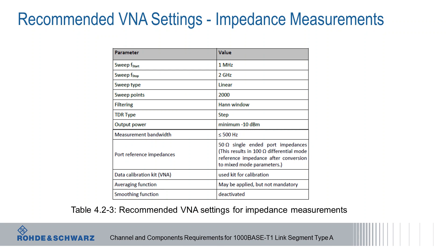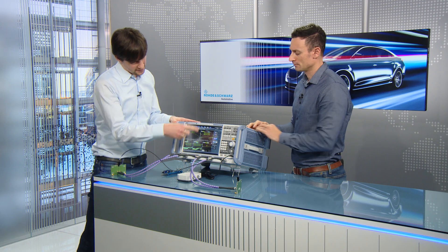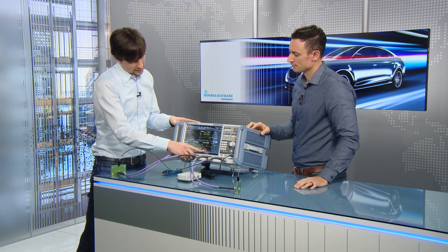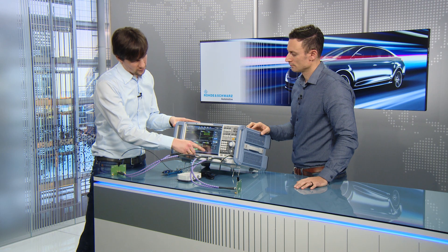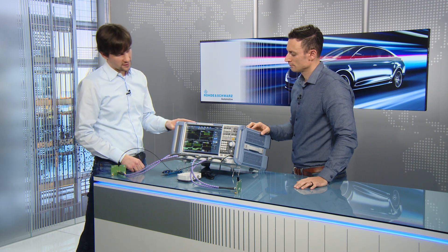The TC9 specification also mentions the impedance measurements. For that we need different settings. To use these different settings in the same screen we can use a different channel. As you can see we use channel 1 here and channel 2 in the other windows, and therefore we can use a different frequency range and as well use a different calibration.